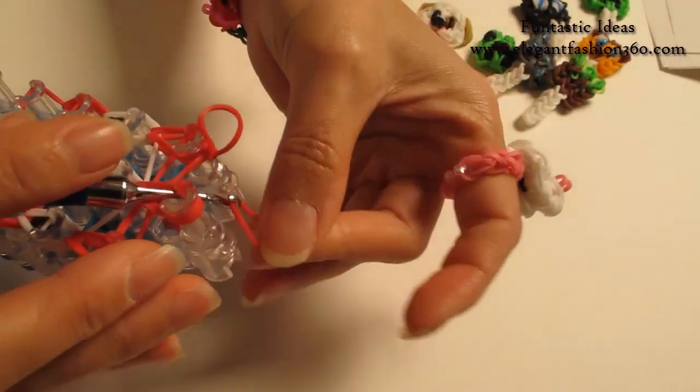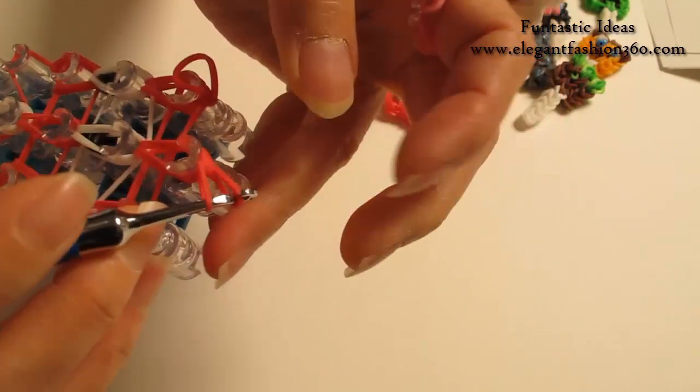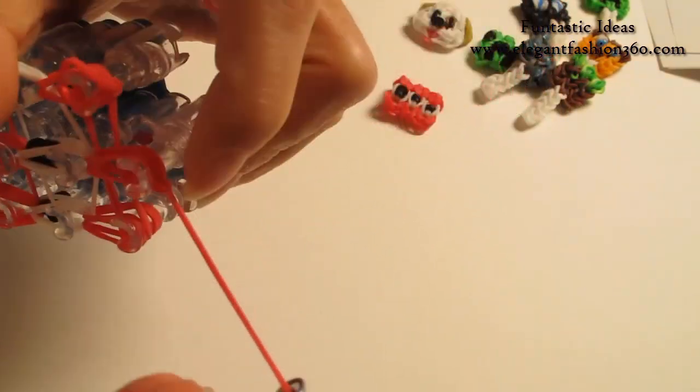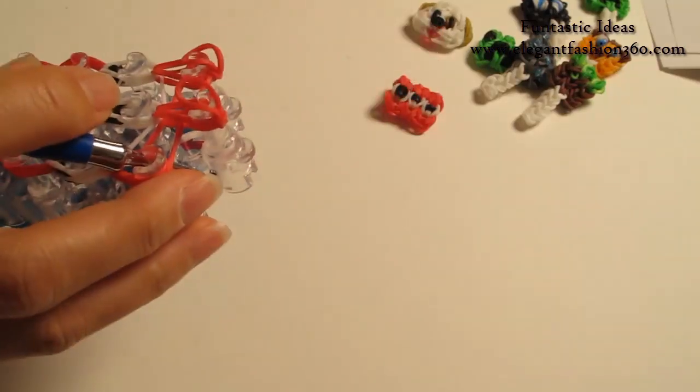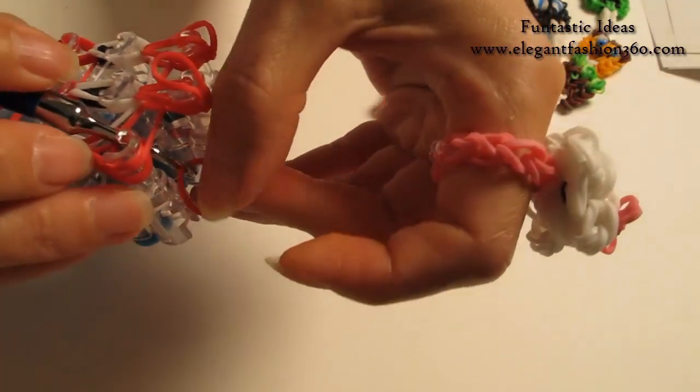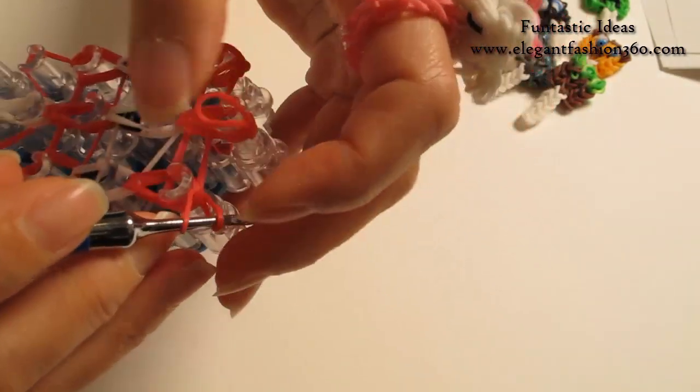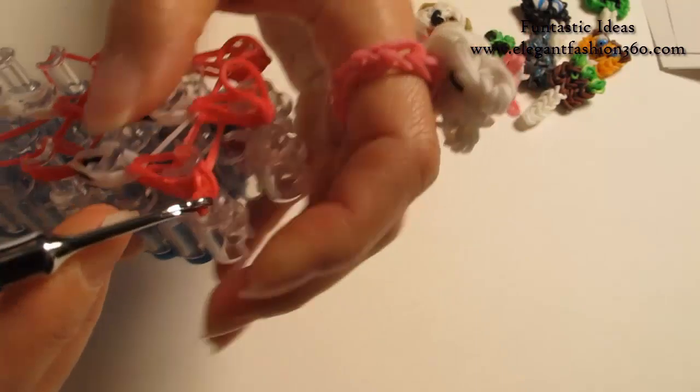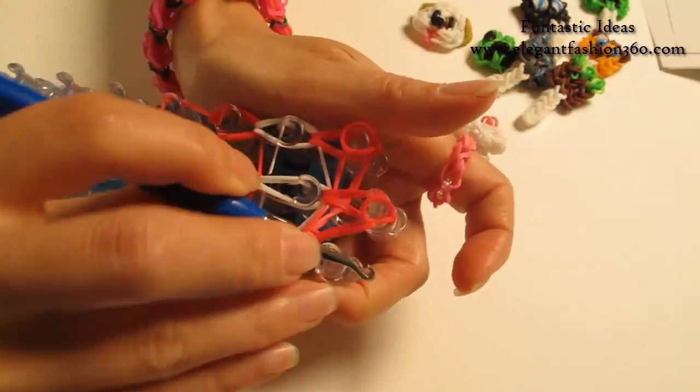Do the same thing for the center and your right. Put both ends on your hook, grab one end through the other, and make a knot here. The same, take one single band, grab one end through the other, tie a knot here. Now we're done. So it's time to take it out.